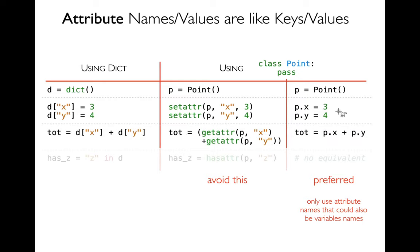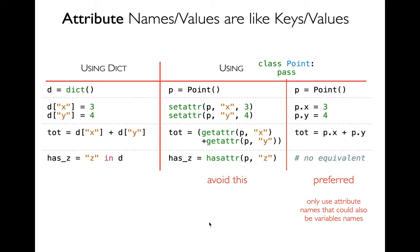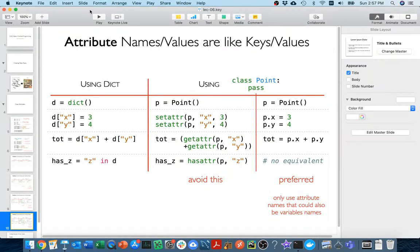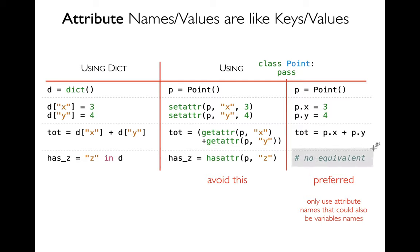We can also pull values out. If I have a dictionary, I do it the same way I set it. There's a 'getattr' function built into Python — I pass it the object and the attribute name, and it returns the attribute value. Or I can use the more common syntax: p.x + p.y. The last thing I can do is check if a certain key is in my dictionary using 'in', or for objects use 'hasattr' — does the p object have the z attribute? That returns true or false. The third dot-notation style doesn't really have an equivalent to that, so it's a little more limited, even though that's what we'll usually be doing.